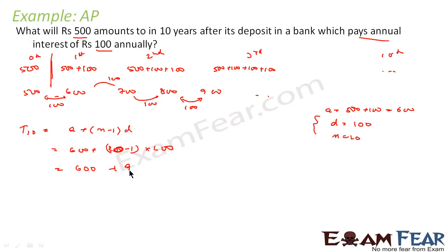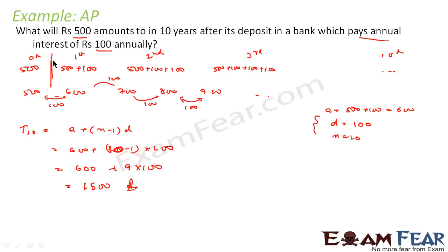T10 = 600 + (10−1) × 100 = 600 + 900 = 1500. So at the end of 10 years the amount will be 1500 rupees. Please note: we found the values of money over time form an AP with a = 600 and d = 100. Starting from n = 1 to n = 10 avoids confusion, and we have got the answer.